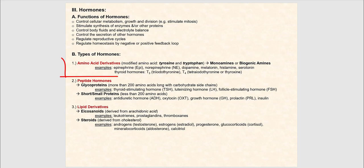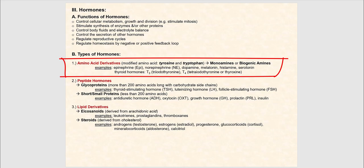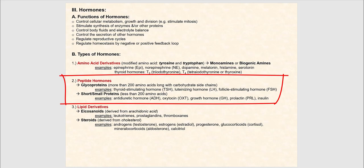Let's now discuss the types of hormones. We begin with the amino acid derivatives, specifically derived from tyrosine and tryptophan, two of the 20 amino acids. When modified, they give us what we refer to as monoamines or biogenic amines. Examples derived from tyrosine and tryptophan are epinephrine, norepinephrine, dopamine, melatonin, histamine, serotonin, and thyroid hormones T3, called triiodothyronine, and T4, tetraiodothyronine, or simply thyroxine.